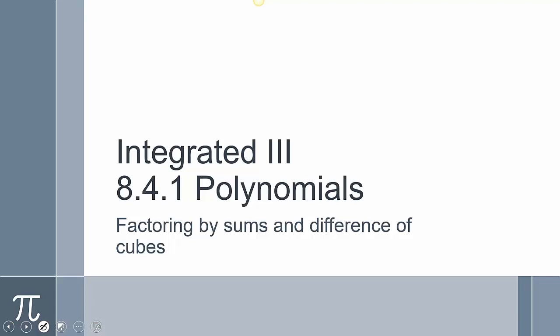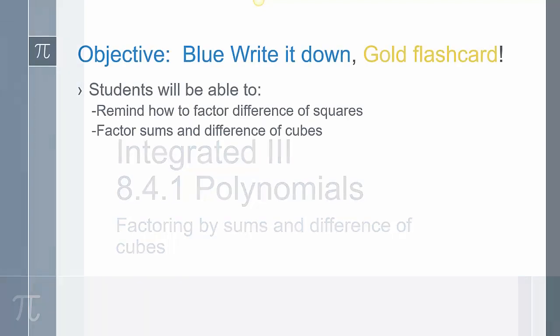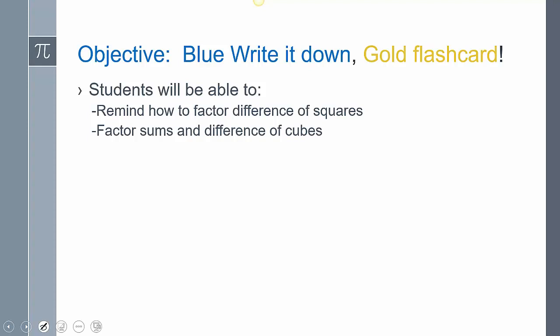This is section 841. We're still in polynomials. Last lesson in this chapter, we're going to be factoring by sums and difference of cubes. So first we're going to remind how we factor a difference of squares, and then we're going to go into factoring sums and difference of cubes.